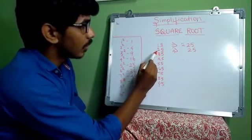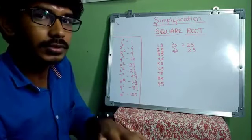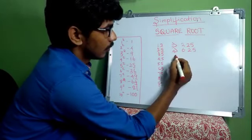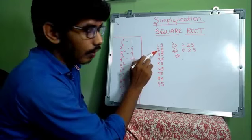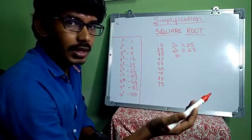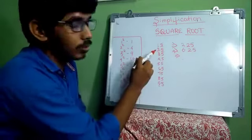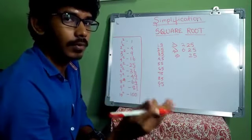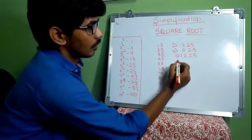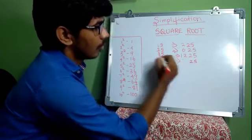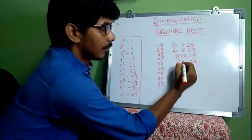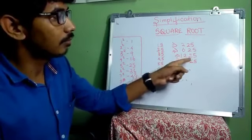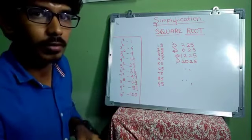For 25, in the tens digit you have 2, and the next number to 2 is 3, so 3 × 2 = 6 — giving 625. For 35, tens digit is 3, next is 4, so 4 × 3 = 12 — giving 1225. And for 45, next number is 5, so 5 × 4 = 20 — giving 2025. Like that it will continue. You can easily find the square root for these numbers.